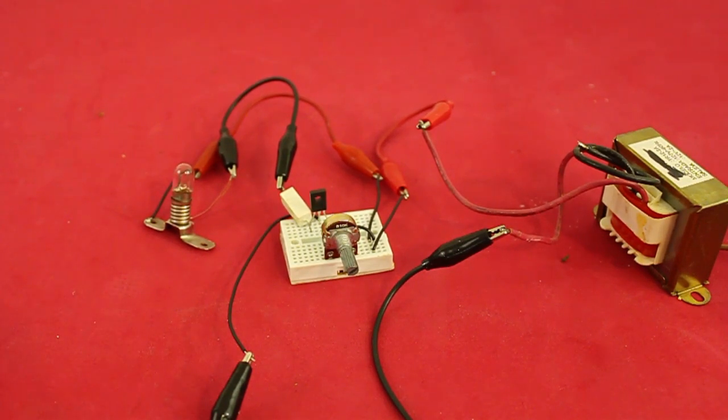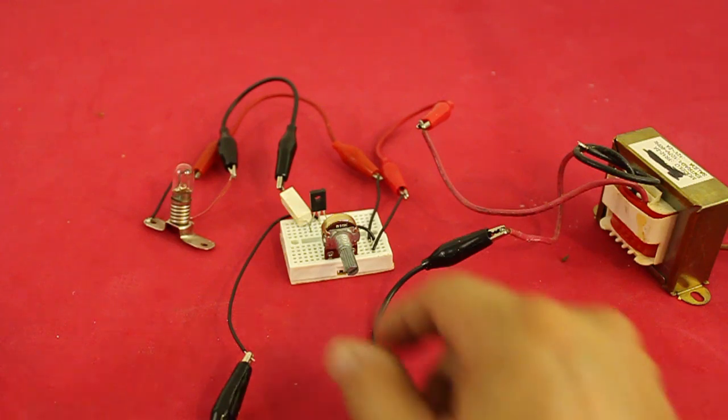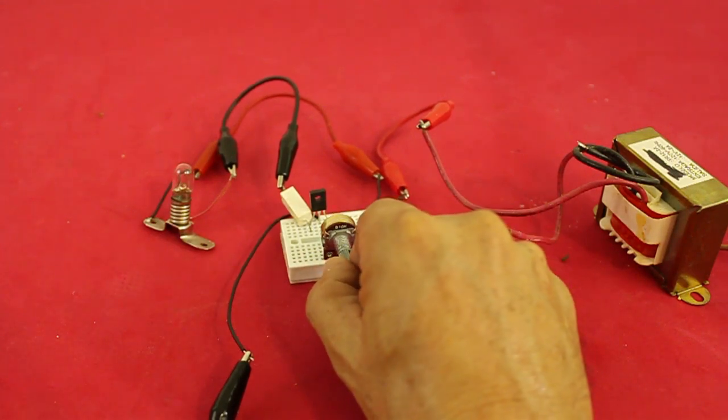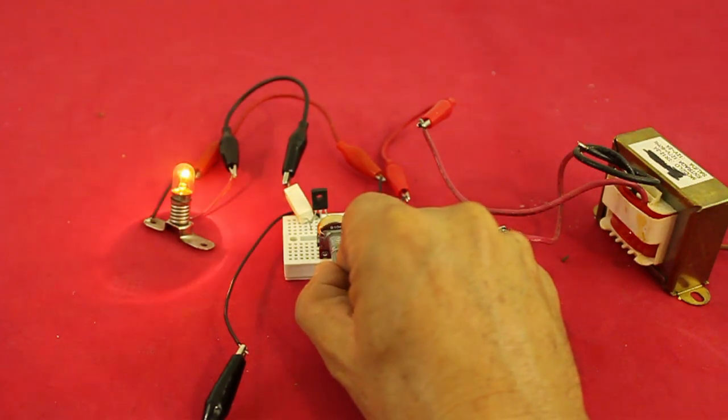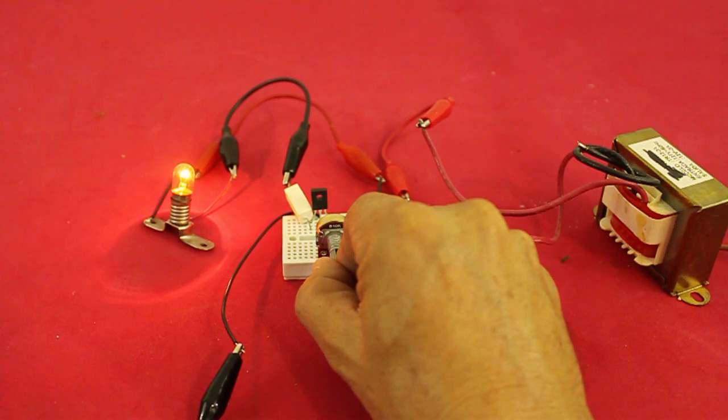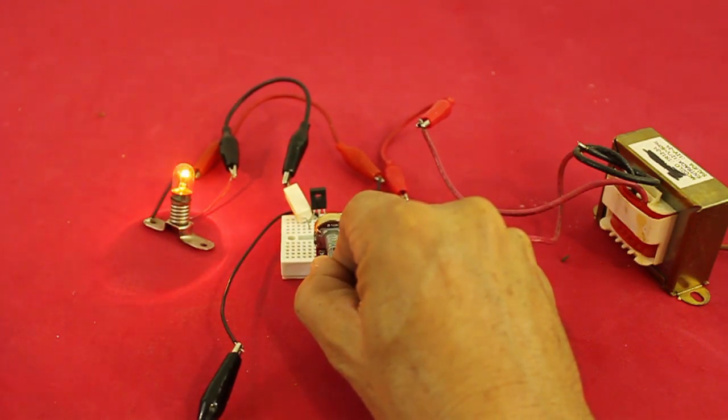Here is the circuit. Let's see it in action and then we will explain how it works. You can see that by moving the potentiometer we can vary the intensity of light of the little lamp.